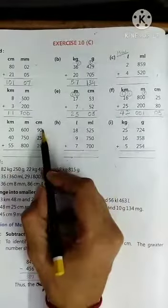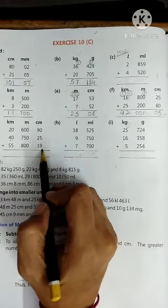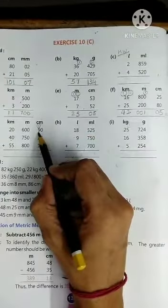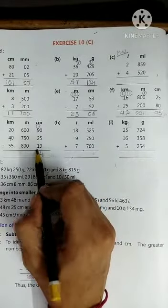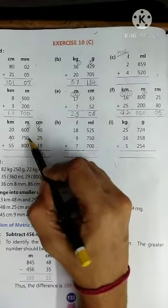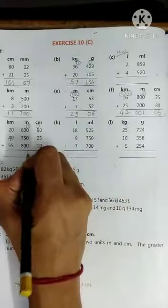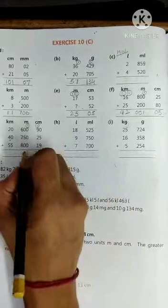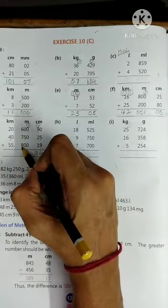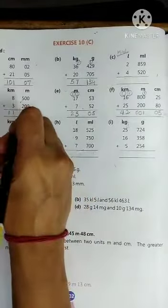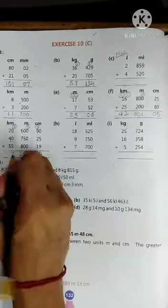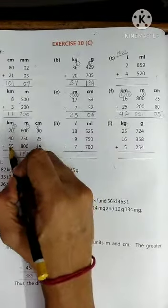Next is 0 plus 5 is 5, 5 plus 9 is 14, 4 and 1 carrying over. 1 plus 9 is 10, 10 plus 2 is 12, 12 plus 1 is 13, 3 and 1 carrying over. 1 plus 0 is 1, 1 plus 0 is 1, 1 plus 0 is 1, 0 plus 5 is 5, 5 plus 0 is 5. 6 plus 7 is 13, 13 plus 8 is 21, 1 and 2 carrying over. 2 plus 0 is 2, 2 plus 0 is 2, 2 plus 0 is 2, 2 plus 5 is 7, 2 plus 4 is 6, 6 plus 5 is 11. Fine everyone?